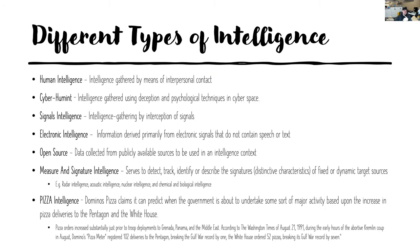There are different types of intelligence. There's human intelligence — your traditional gathering of information, social engineering, building relationships with people to extract information. We've seen a lot of that in Cold War spy games. Cyber human intelligence is really the same thing but in a cyber world, using intelligence and psychological techniques in the cyberspace realm.